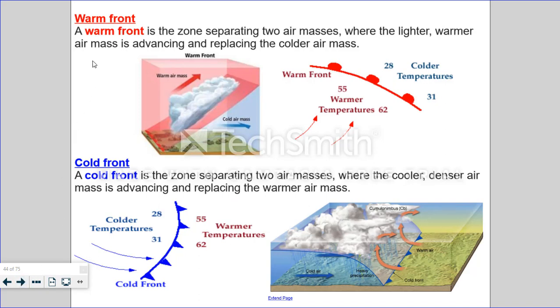A warm front is the zone separating two air masses, where the lighter warm air is advancing and replacing the cold air. So here you can see warm air rising over the cold air, pushing it out of the way.